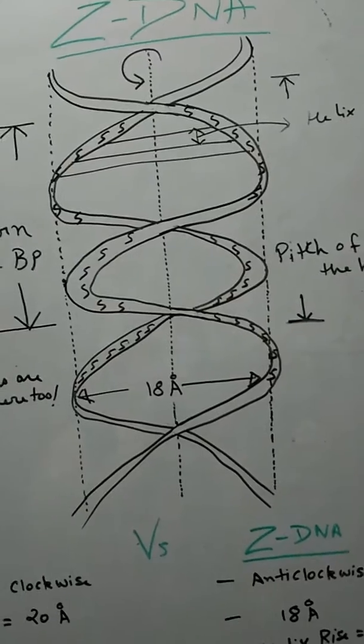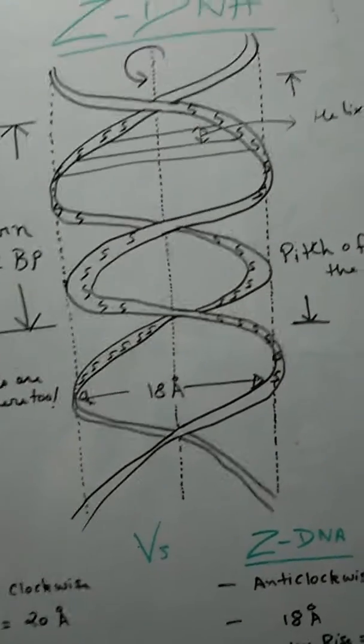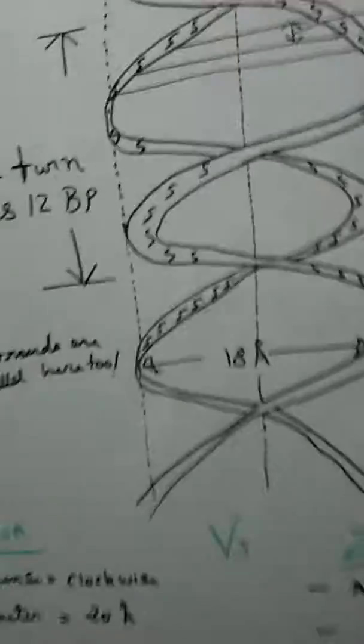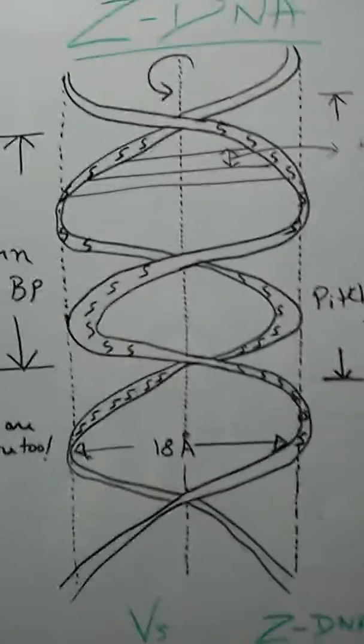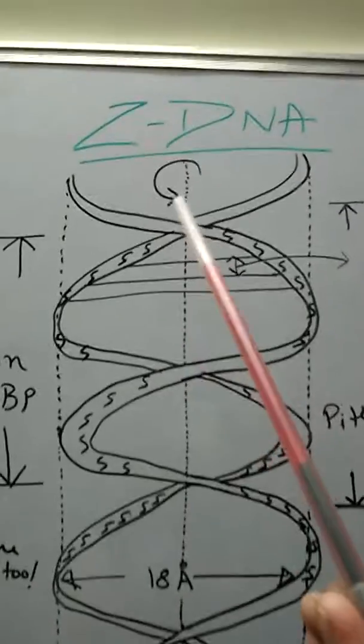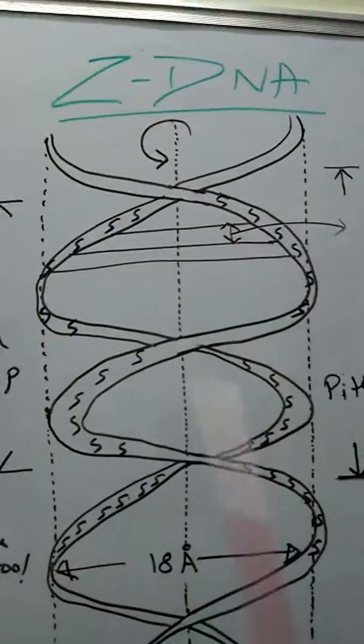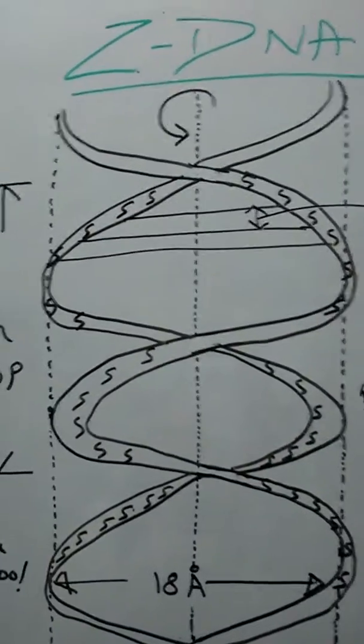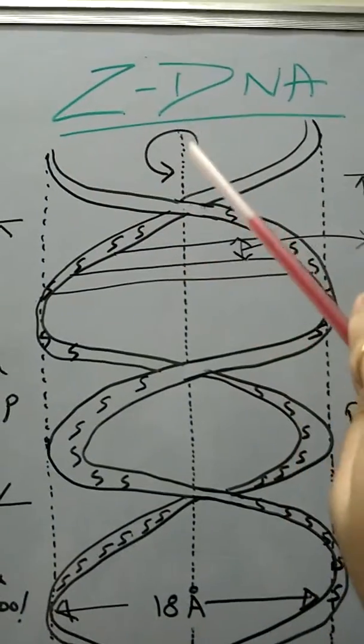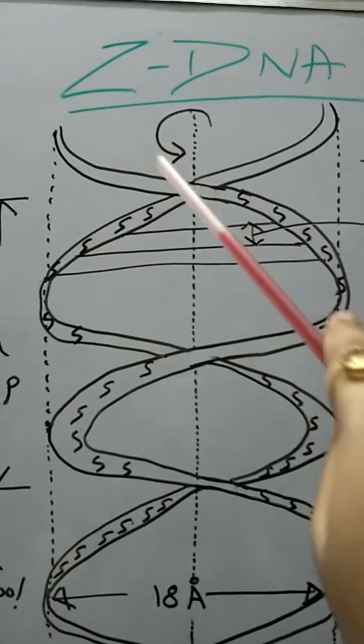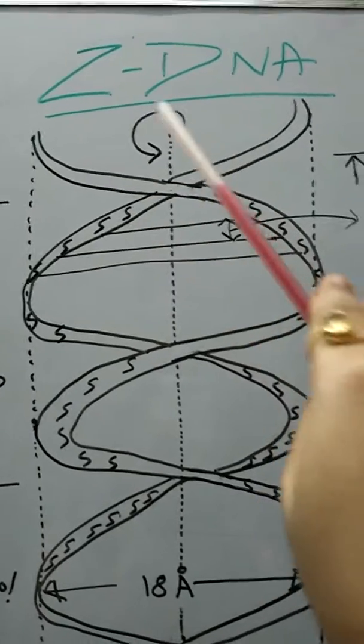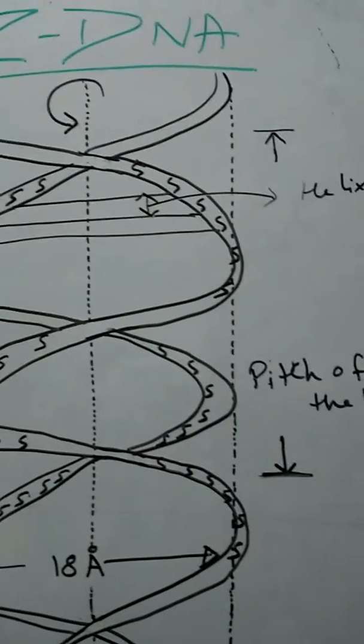First is the anti-clockwise rotation of the coil or the polynucleotide chains. This is the anti-clockwise rotation or the left-hand side rotation. This is the first difference.